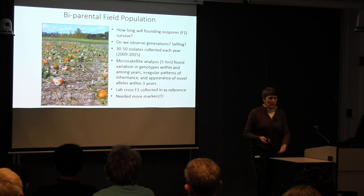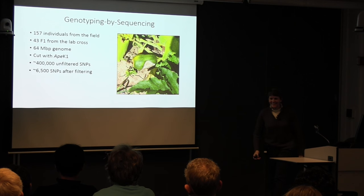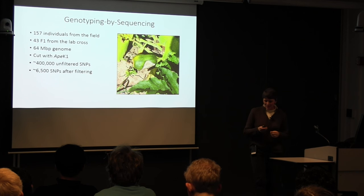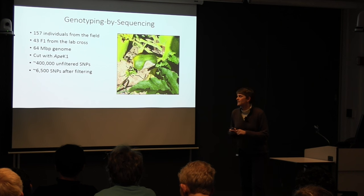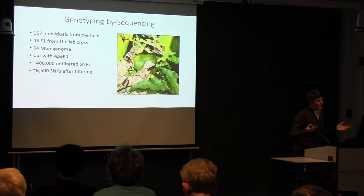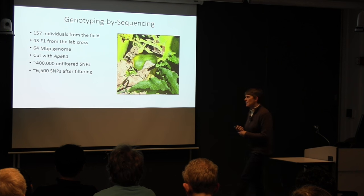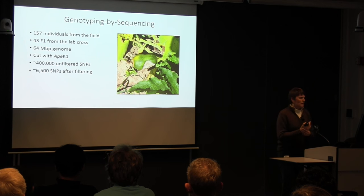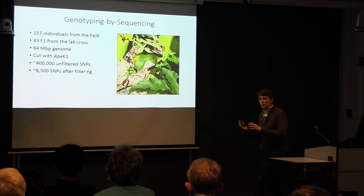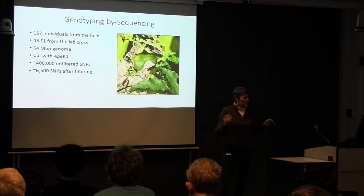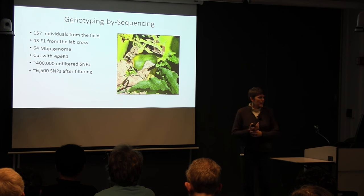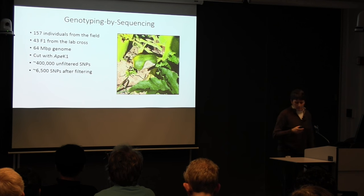When you need more markers, you do GBS. Maren Carlson took over the project and we have 157 individuals from the field, 43 individuals from our F1 lab cross, and we've done genotyping by sequencing. The genome of Phytophthora capsici is about 64 megabases. We used ApeKI, which worked fine for our purposes. Maren identified about 400,000 SNPs before filtering, and after filtering we're now using about 6,500.